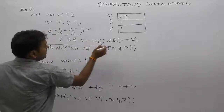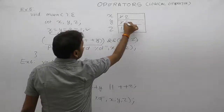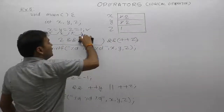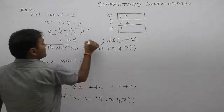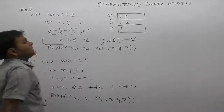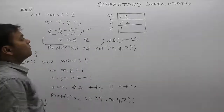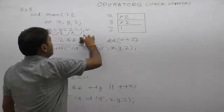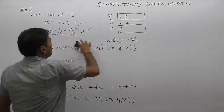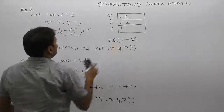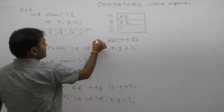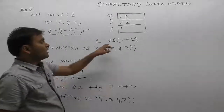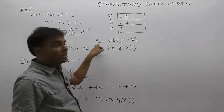After pre-incrementing x, the incremented value of x replaces the value — x becomes two. Similarly, pre-increment is applied to y; the incremented value of y replaces the current value. Both the first and second conditions are true, so the overall AND result is also true — that means one.